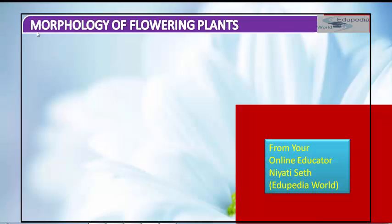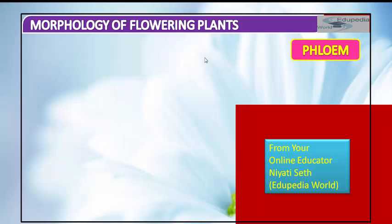My topic for this presentation is the 8th section of the chapter on internal morphology of flowering plants — the anatomy of angiosperms. In this section we will discuss phloem, which is a complex permanent tissue. I have already taught you about xylem; now we will discuss phloem. Phloem transports food material, usually from leaves to other parts of the plant body.